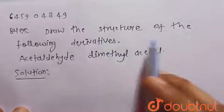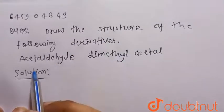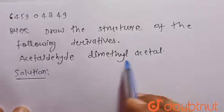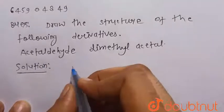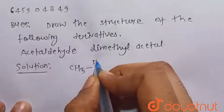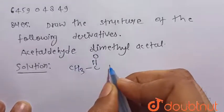Hello everyone, consider the given question: draw the structure of the following derivatives. So we have to write the structure of the acetaldehyde dimethyl acetal. So we know that acetaldehyde is CH3-C double bond O-H.